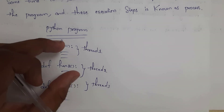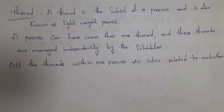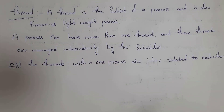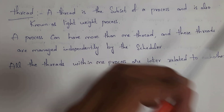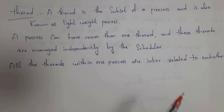A thread is used to execute a block of code, so we call a thread a subprocess. A thread is the subset of a process — thread is nothing but a subprocess, and is also known as a lightweight process. A process can have more than one thread.